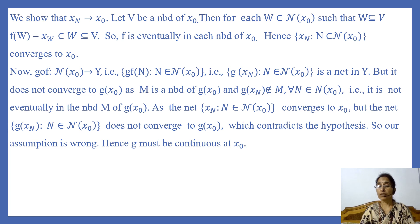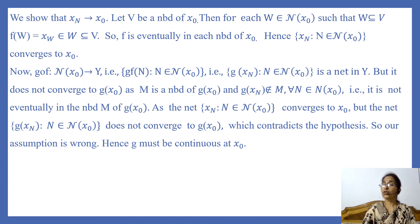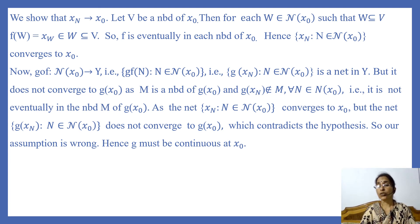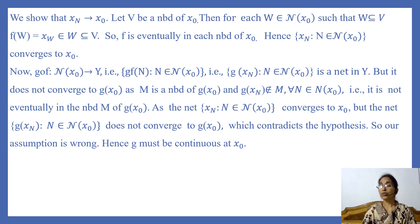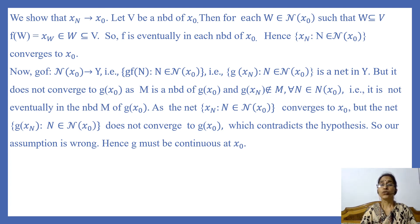That is, the net G(x_N) is not eventually in the neighborhood M of G(x₀). So the net x_N converges to x₀ but the net G(x_N) does not converge to G(x₀), which contradicts the hypothesis that whenever F_A converges to x₀, G(F_A) converges to G(x₀). So our assumption is wrong, hence G must be continuous at x₀. Thank you.